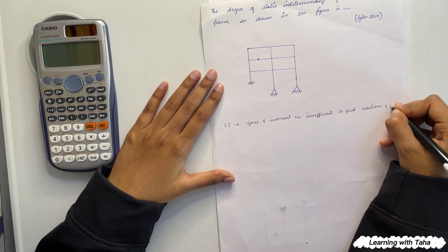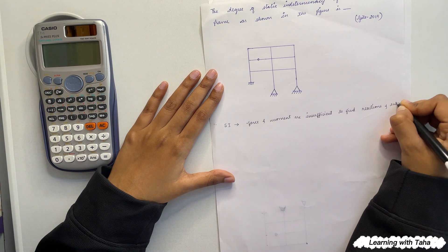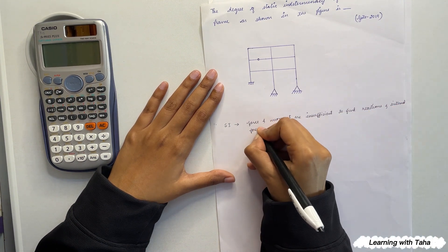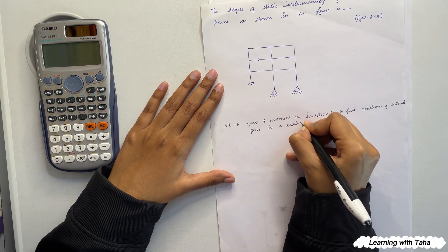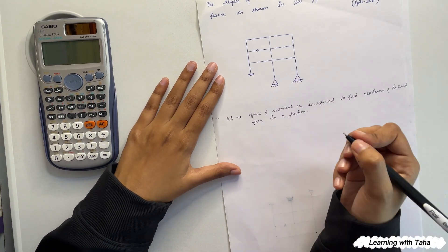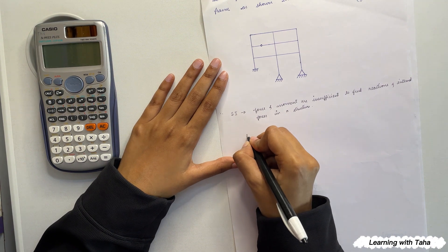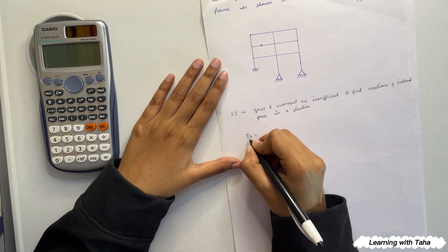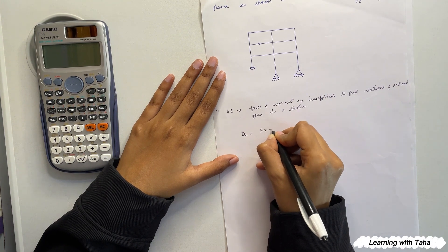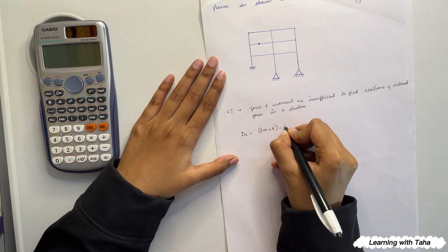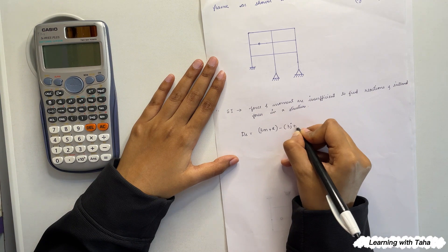And the internal forces in a structure. So in that condition we use special equations. For frame, we use the equation DS equals—that is, degree of static indeterminacy equals 3m plus r minus 3j plus a.